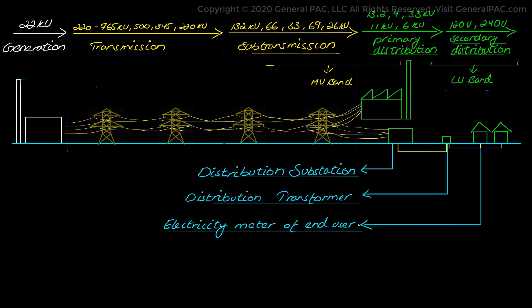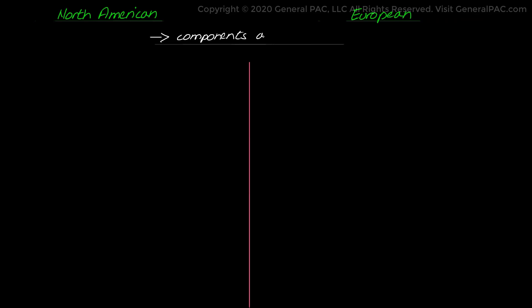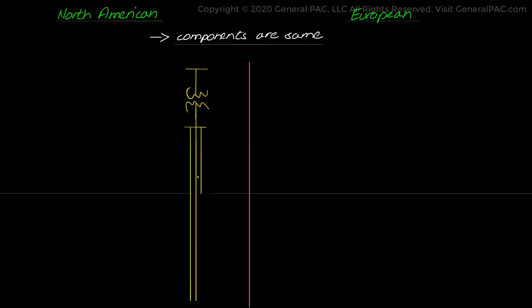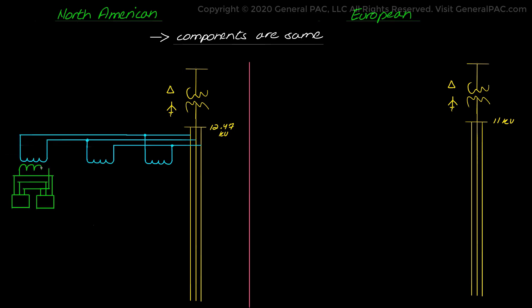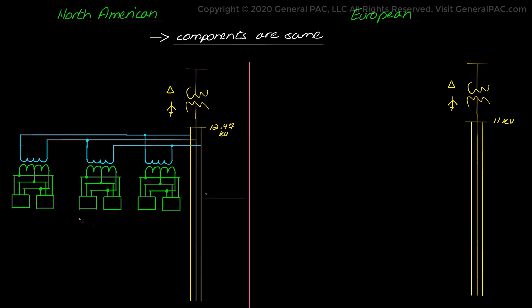Distribution systems have evolved into different forms around the world, and the two main designs followed by the majority of countries are the North American and the European designs. For both system topologies, the components used are very much the same and both systems are radial. The main difference lies in the layouts, configurations, voltage levels, and applications, which can be seen in this diagram.